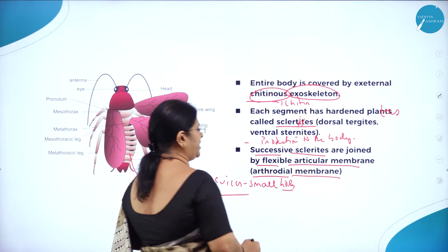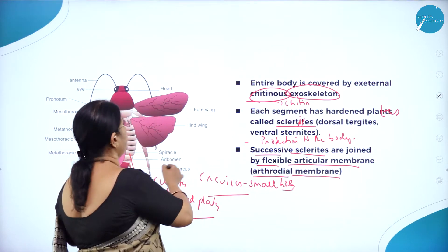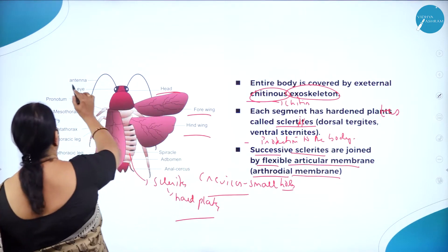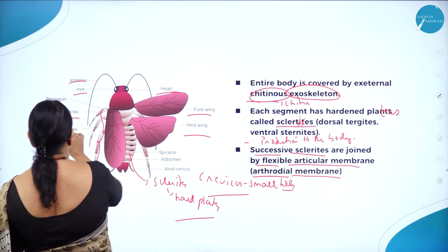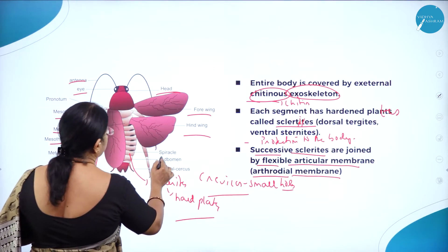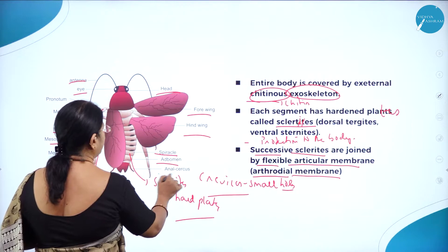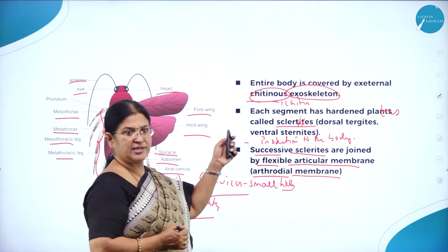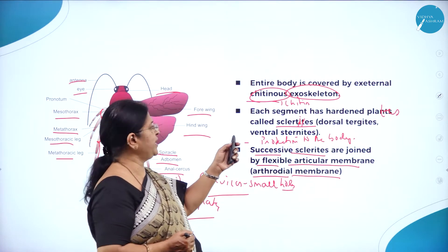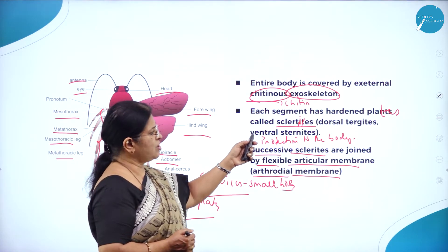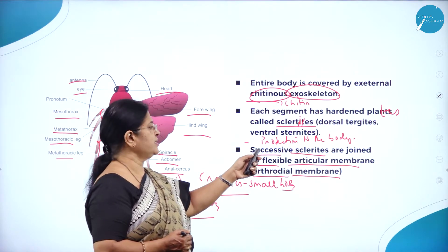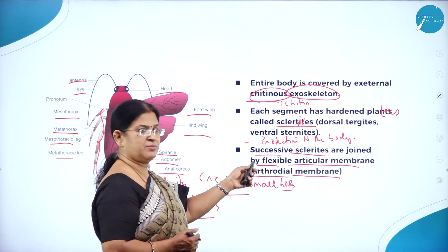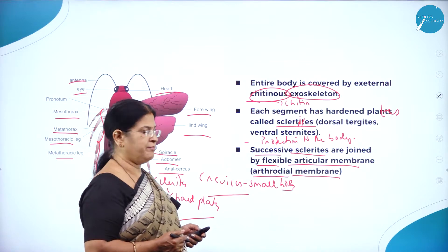Here you can see the forewing, hind wing, head, antenna, eye, mesothorax, metathorax, spiracle, abdomen, and anal cerci. The entire body is covered by external chitinous exoskeleton. Each segment has hardened plates called sclerites — dorsal tergites and ventral sternites — mainly for protection to the body. Successive sclerites are joined by the flexible arthrodial membrane.